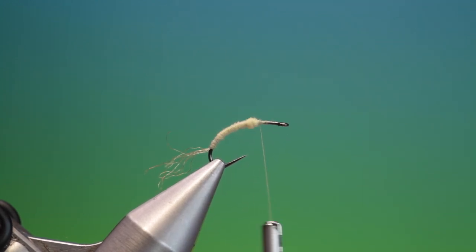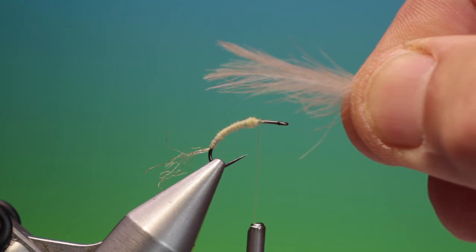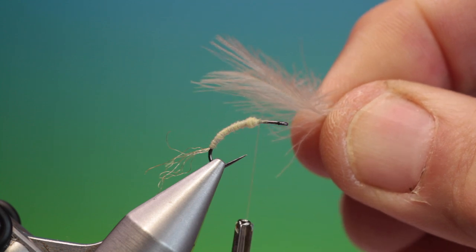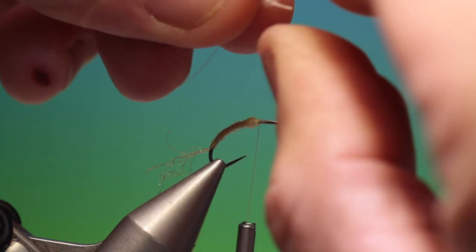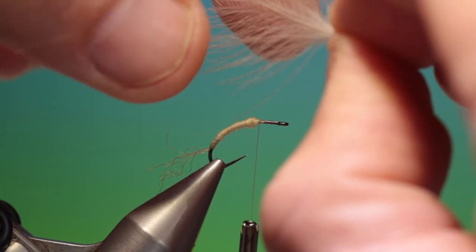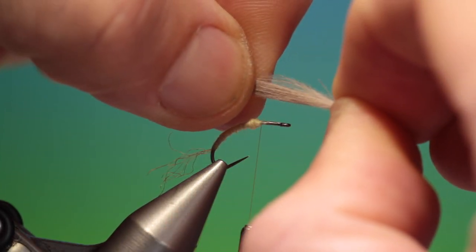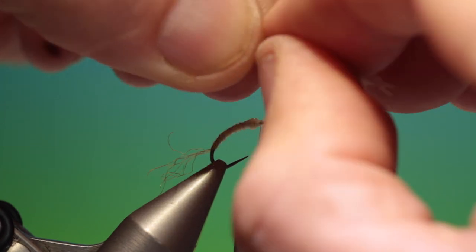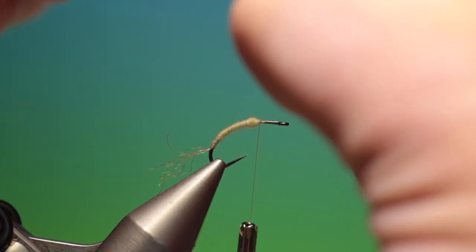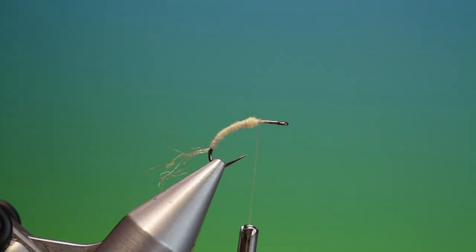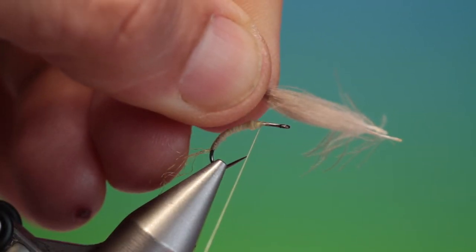We go in front. We take two CDC hackles and place them back to back. Then holding the points, we level the tips up and we pull them through our fingers like this to form. Just want to get those tips correct. There we are, keeping them like this.